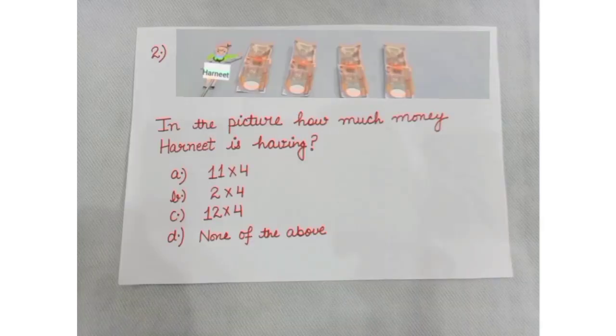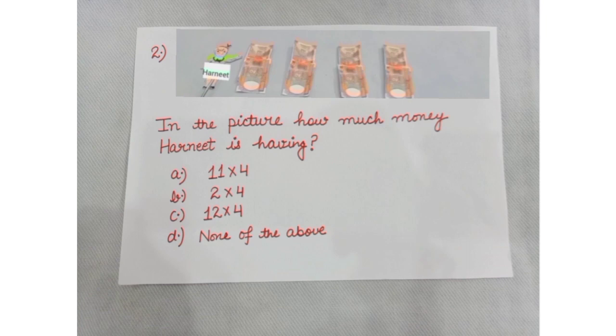Sum number 2 for you. In the picture, how much money is Harneet having? A: 11 into 4. B: 2 into 4. C: 12 into 4. D: none of the above.